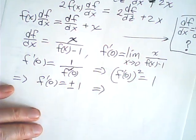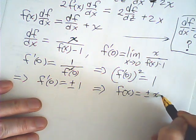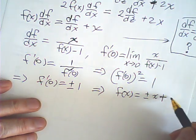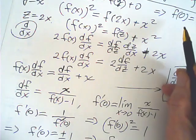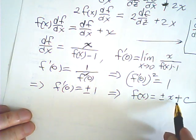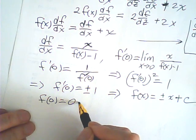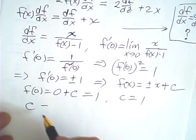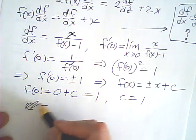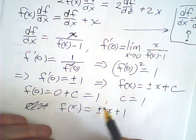Therefore, f'(0) equals positive or negative 1. This means f(x) equals plus or minus x plus c. Since f(0) equals 1, substituting gives 0 plus c equals 1, so c equals 1. Therefore, f(x) equals plus or minus x plus 1. That is my answer.